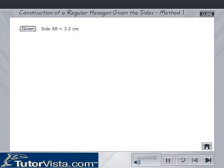Method 1: To construct a regular hexagon, given side AB is equal to 3.2 cm. The steps of construction are as follows.